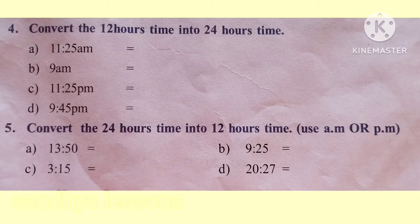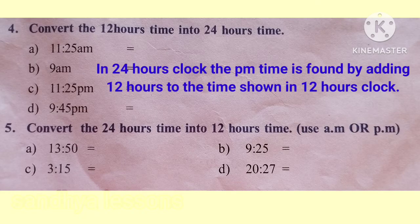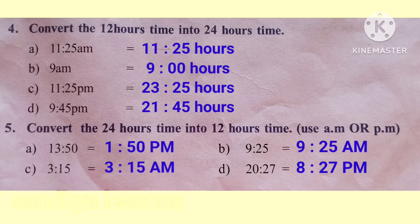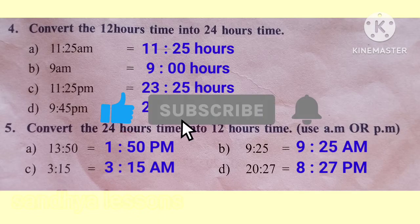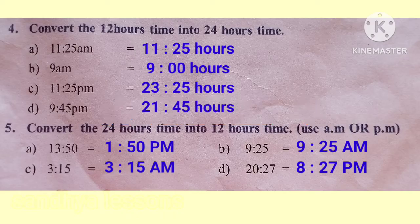Fourth question: convert the 12-hour time into 24-hour time. In the 24-hour clock, PM time is found by adding 12 hours to the 12-hour clock time. A: 11:25 AM equals 11:25. B: 9 AM equals 9 hours. C: 11:25 PM equals 23 hours 25 minutes.